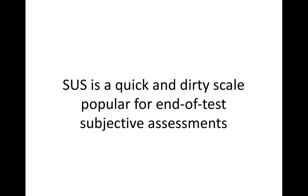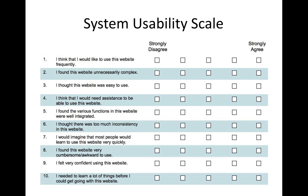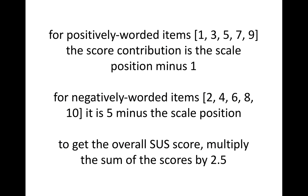The System Usability Scale is a quick and dirty scale, popular for end-of-tests. It consists of ten questions, and in the end you get a notion of how effective, how efficient, and how satisfactory your product or service is. Usually, this System Usability Scale is applied when your product is either in the high-fidelity phase or in the market.